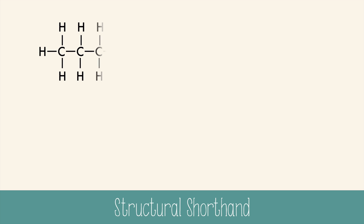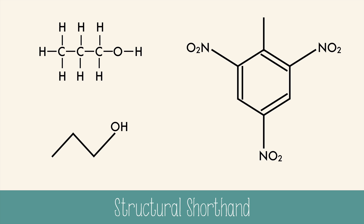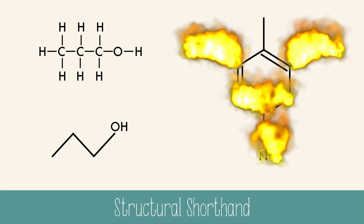If there are other elements or groups that are part of the molecule that aren't carbon or hydrogen, they'll be written in. On this molecule, there's a hydroxyl group made of oxygen and hydrogen, so the OH is added after the third carbon is represented. You can also draw more complicated structures with double bonds or rings using the same shorthand. This molecule drawn here is trinitrotoluene, also known as TNT.